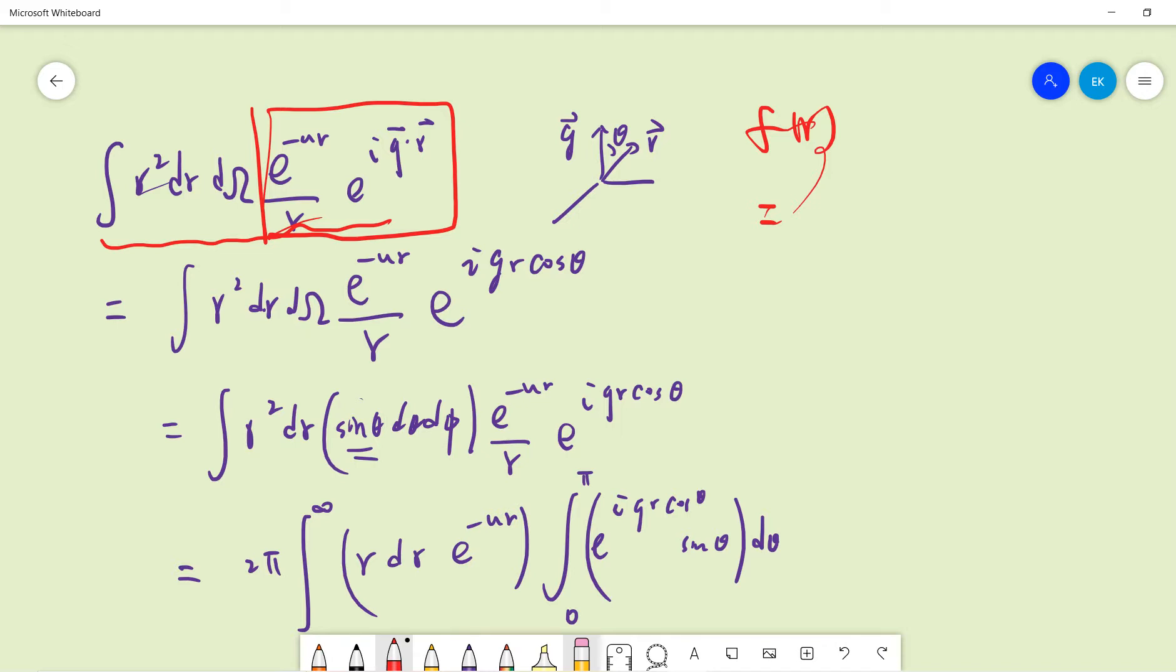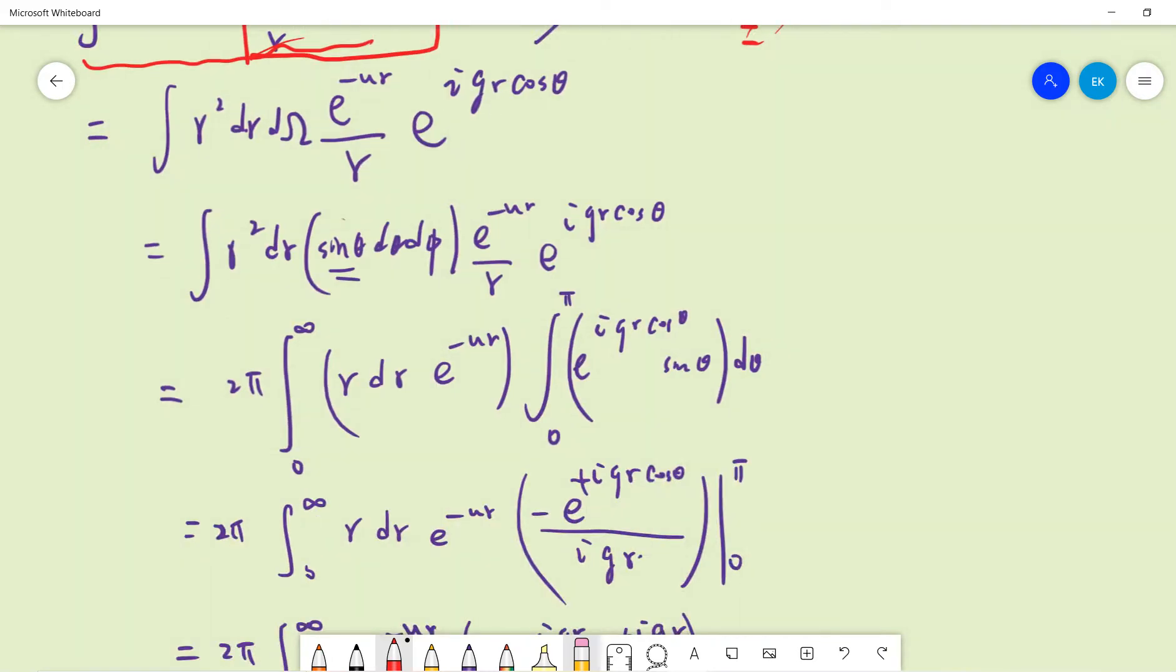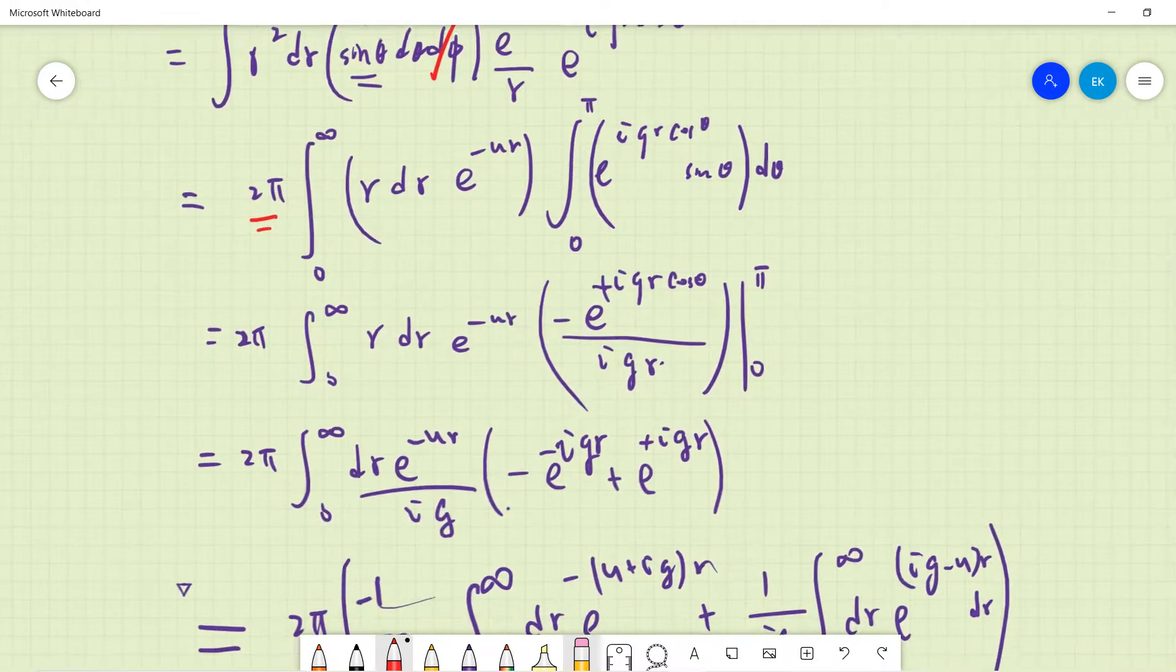We know that d omega is the solid angle, so sine theta d theta d phi. Now it's easier to separate these because there's an r integral and we integrate out d phi to get 2π. This is the r integral and this is the sine theta integral.